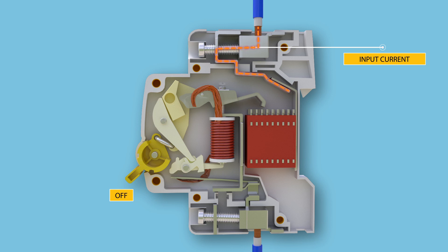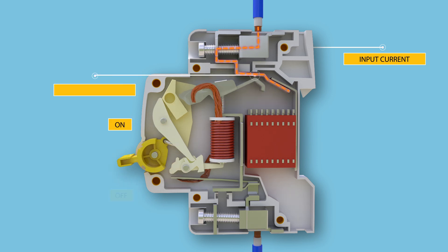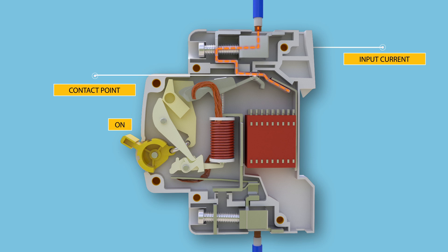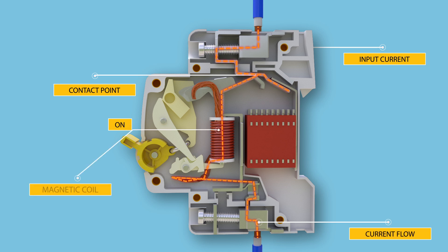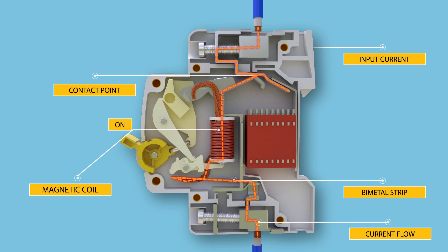Under normal working conditions, the circuit breaker works when we move the operator manually from the off position to the on position. The electric current carrying path, as shown in the animation, goes: first through the incoming terminal, then the contact point of the moving and fixed contacts, then the magnetic coil, then the bimetallic strip, and finally the outgoing terminal — all arranged in series.